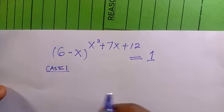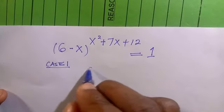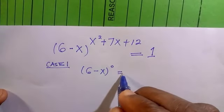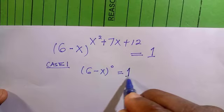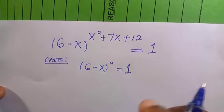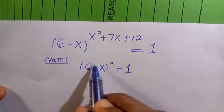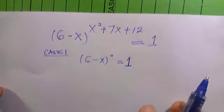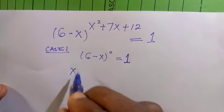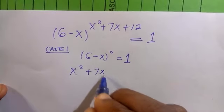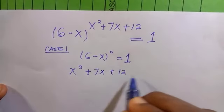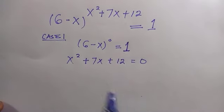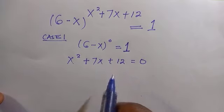Let's consider the first case. If we have (6 - x) raised to the power of zero, we know this equals one. So the one on the right-hand side is just like (6 - x) raised to the power of zero. This means that x² + 7x + 12 = 0. So we have a quadratic equation to solve.